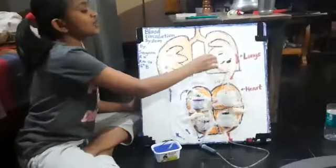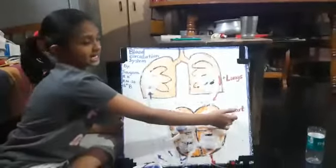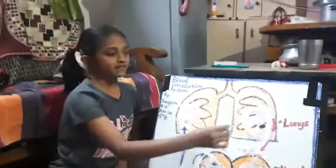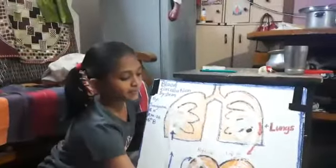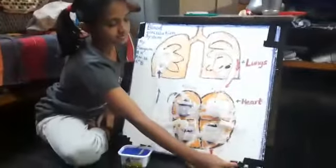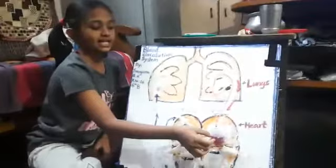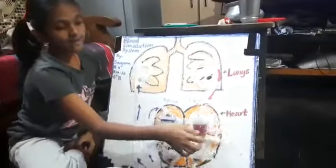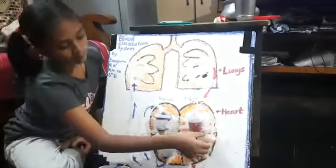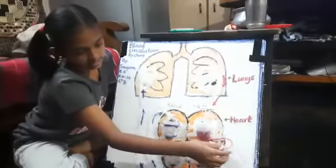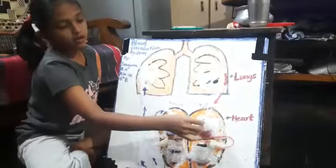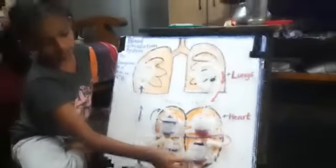Now, this pure blood should be pumped to all organs of our body. This job is done by heart. The blood first enters the left upper chamber of our heart. When sufficient amount of blood is accumulated here, the valve between two chambers opens. The blood flows from the upper chamber to the lower chamber.